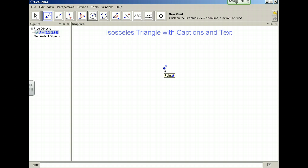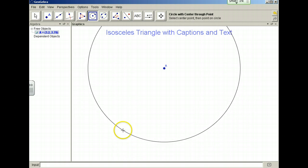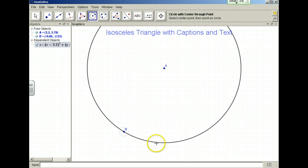We'll click on A as the center point of the circle, and then we'll click on a point on the circle.